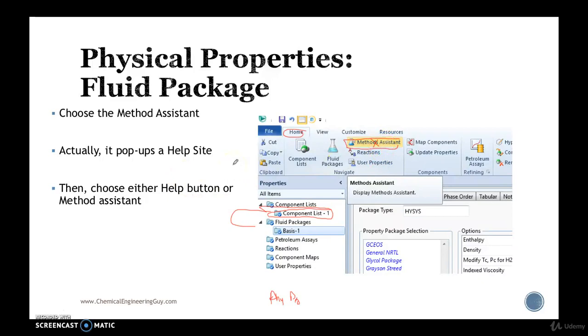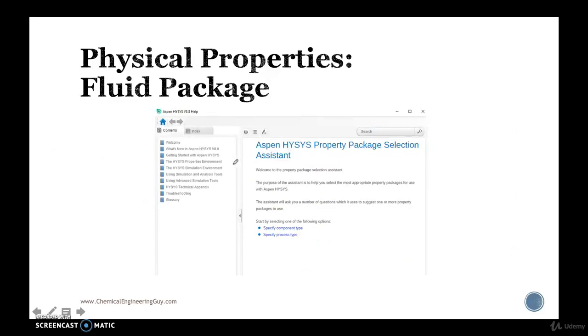So it will actually show you a help site button. It's no longer an assistant. It's actually just a link that links you to a help section right here, which is Aspen HYSYS property package selection assistant. And it will go this way, either choose by component or by process type.